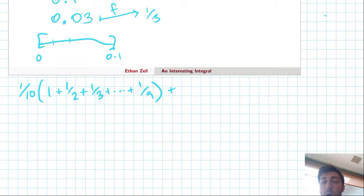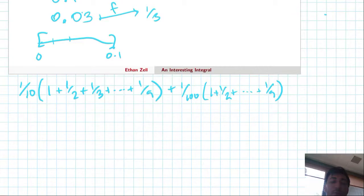Then the next one, when we split up the smaller interval, we get one one hundredth times the same sum: one plus one over two all the way to one over nine. Then we have the same problem again—zero to one one hundredth—and we can split up this interval further into ten pieces and look at the sum again.